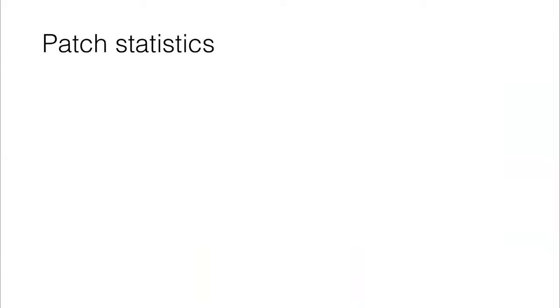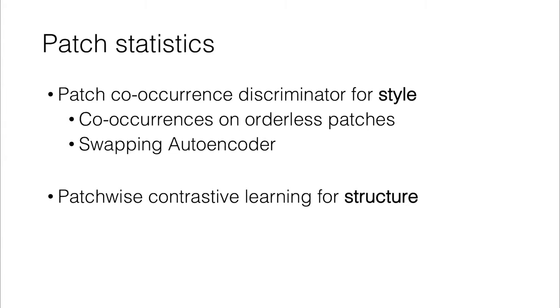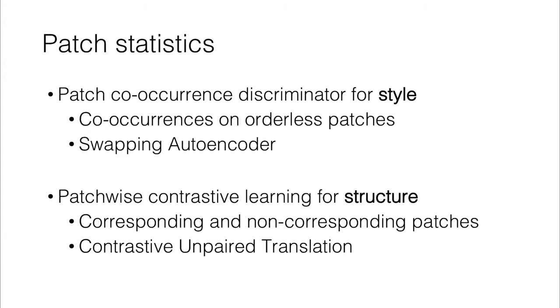I think in this talk, we've discussed how we can use patch statistics in a few interesting ways. We can use co-occurrences of orderless patches, and that can give us something that corresponds to style. I think this discriminator that we've used, this patch co-occurrence discriminator, could be used for other follow-on projects as well. But we showed its effectiveness here in the swapping autoencoder. We also used a patchwise contrastive loss for structure. Here the patches are not orderless. The order really matters. In fact, we're specifically relying on corresponding and non-corresponding patches, putting the corresponding ones together away from the non-corresponding ones. We found that could be used effectively in an unpaired image translation scenario.